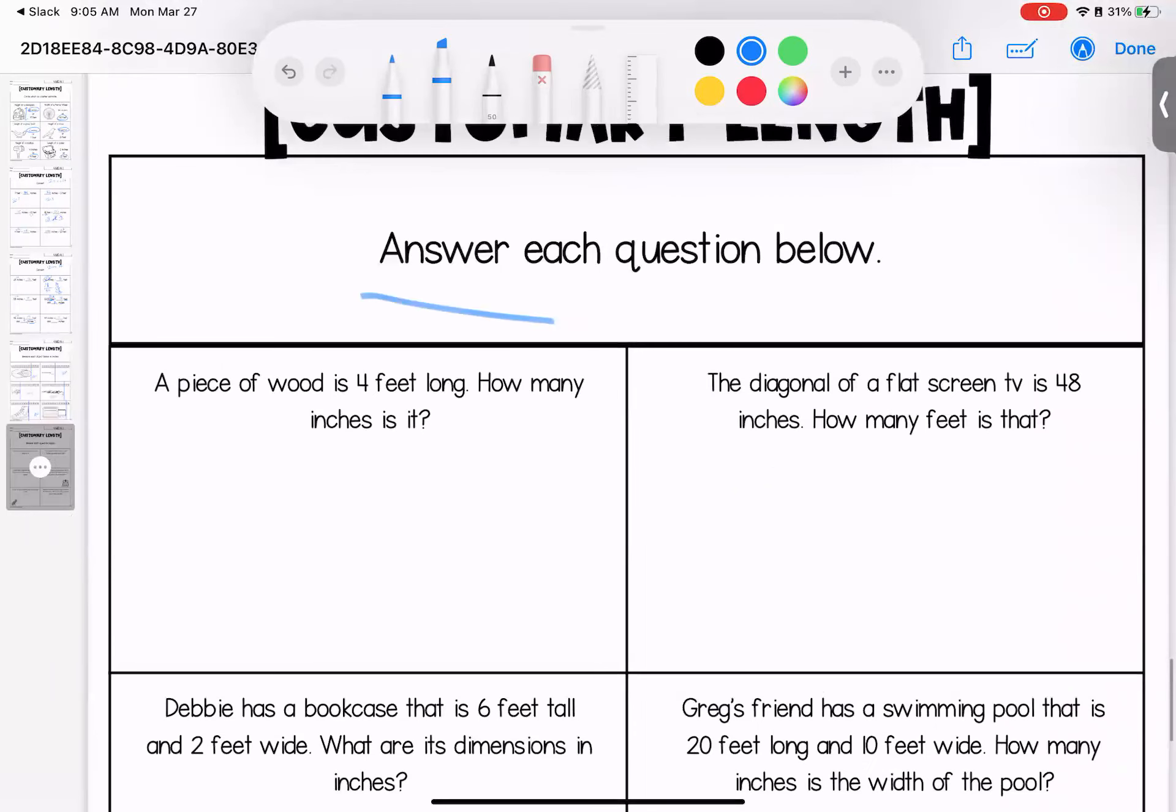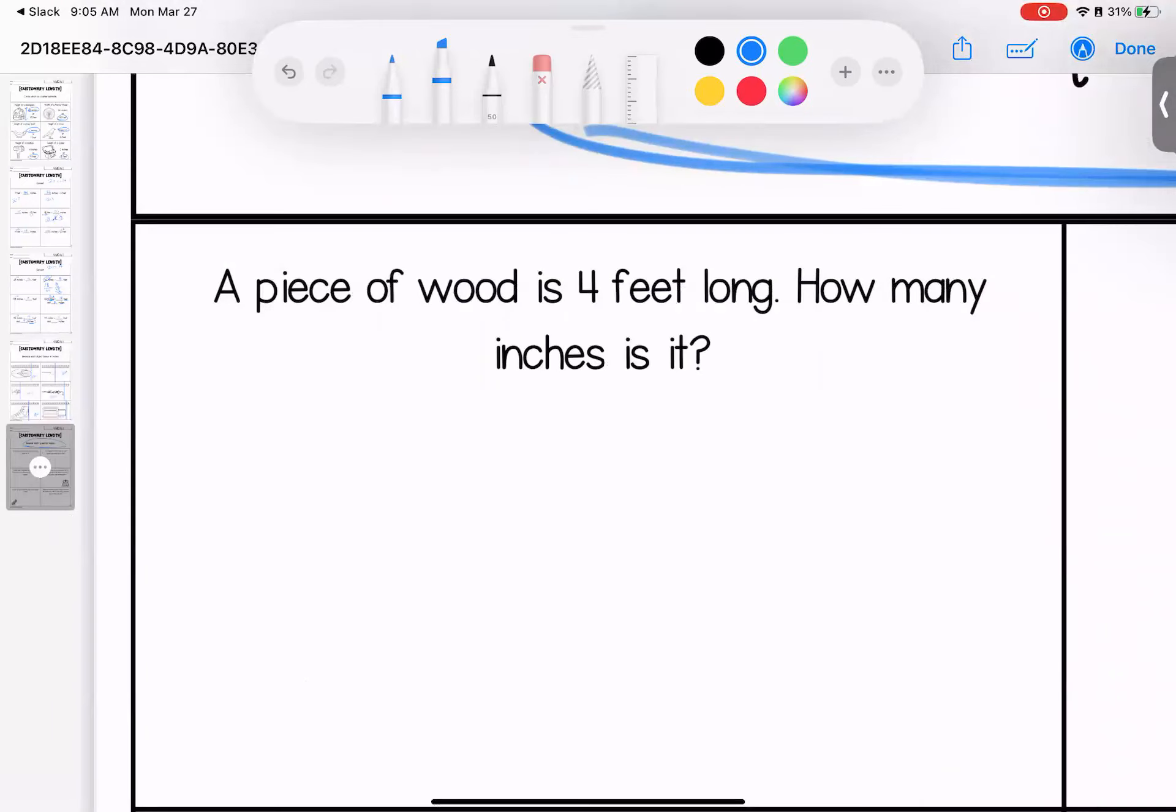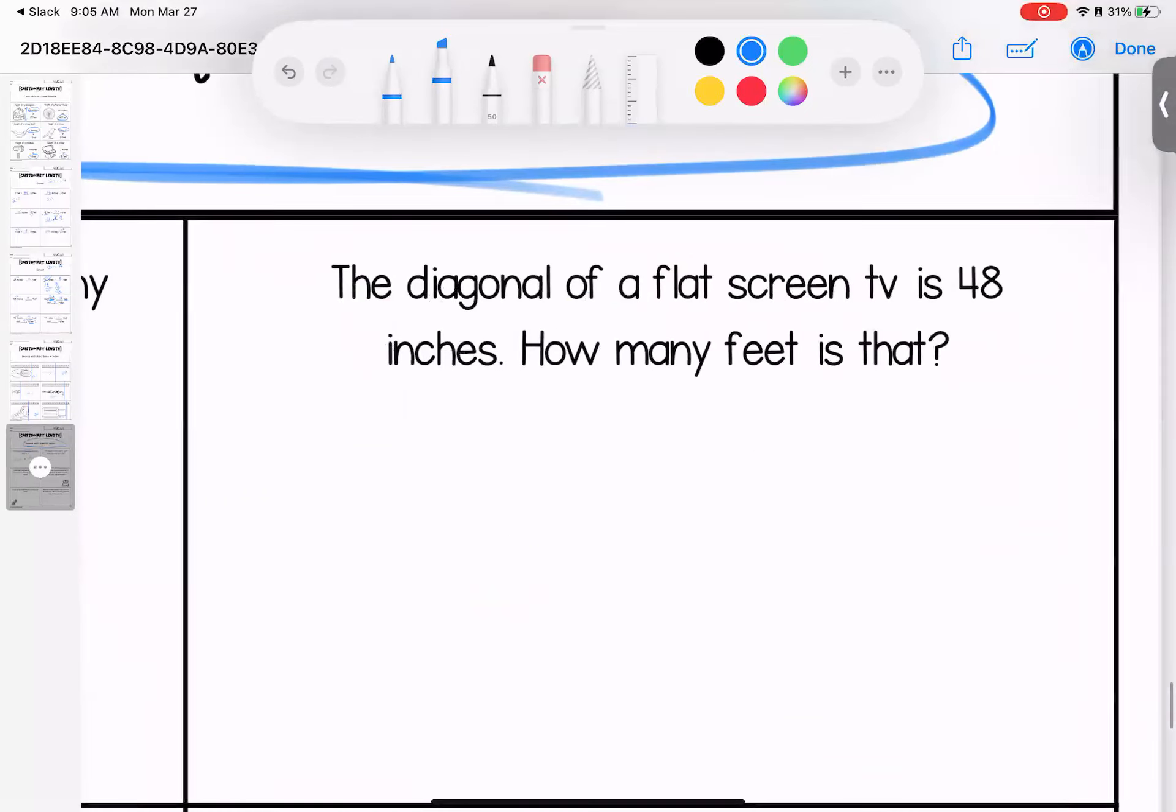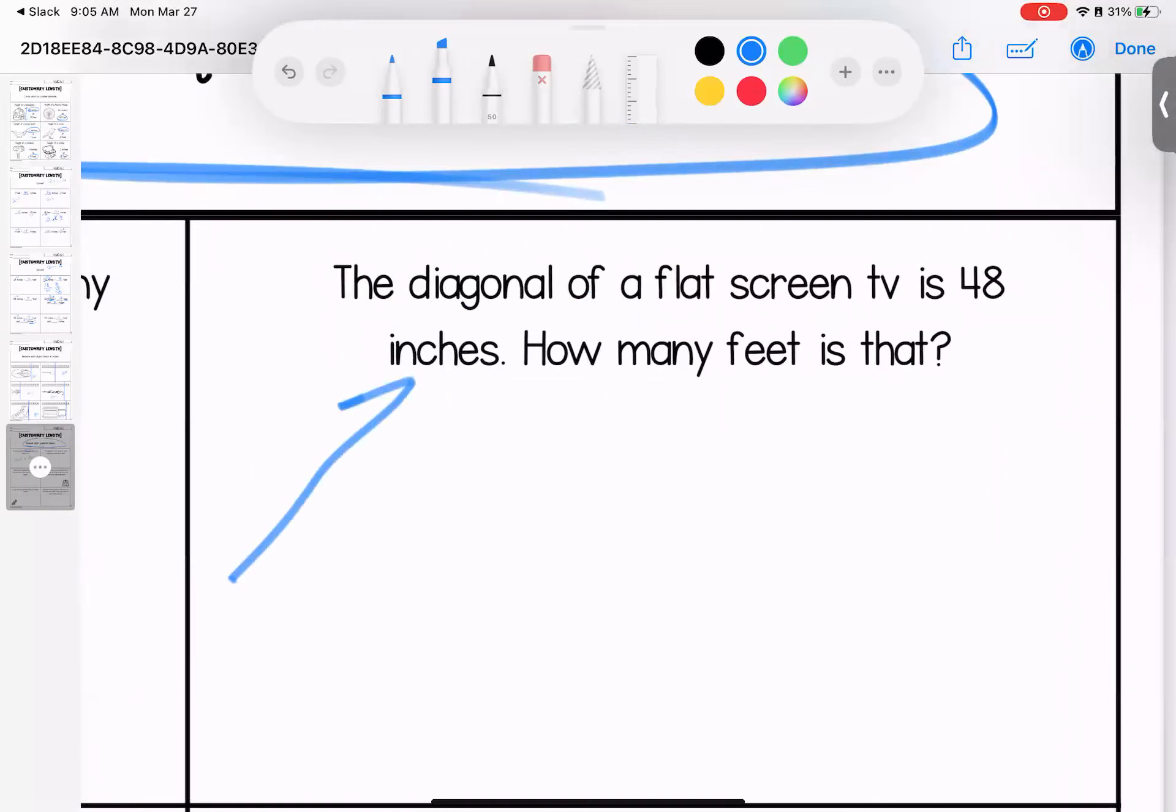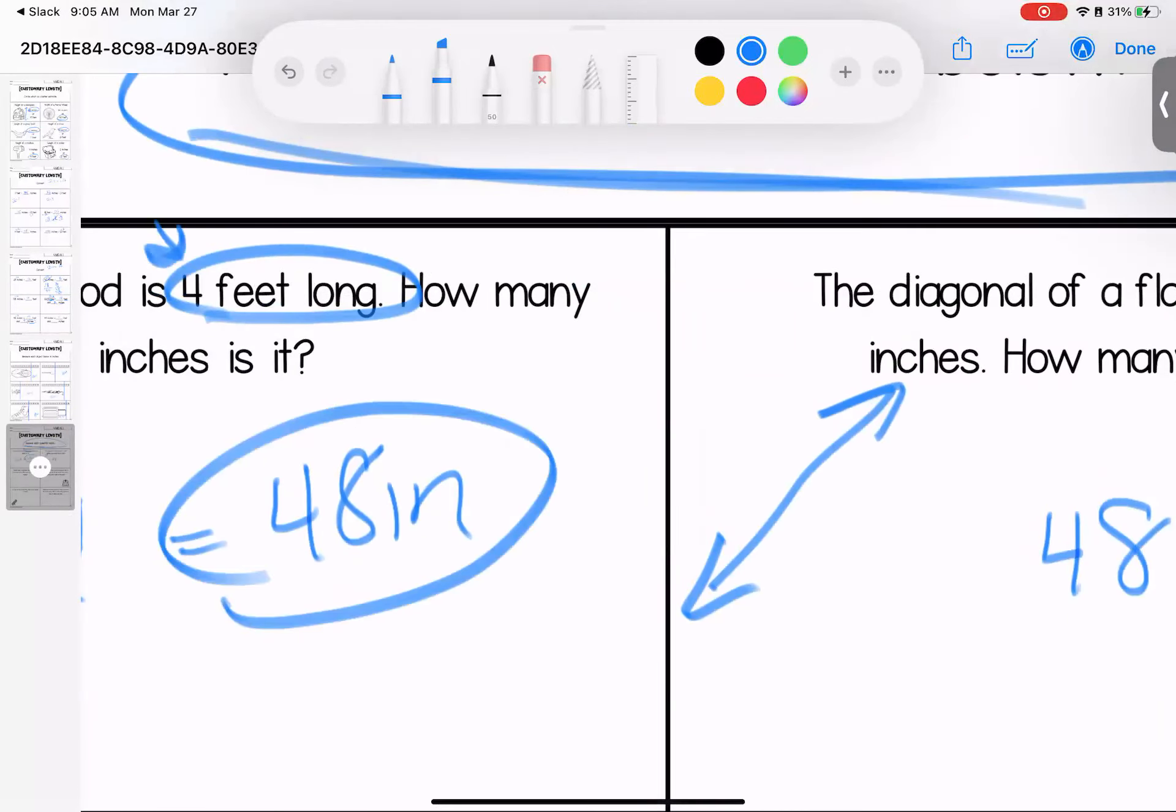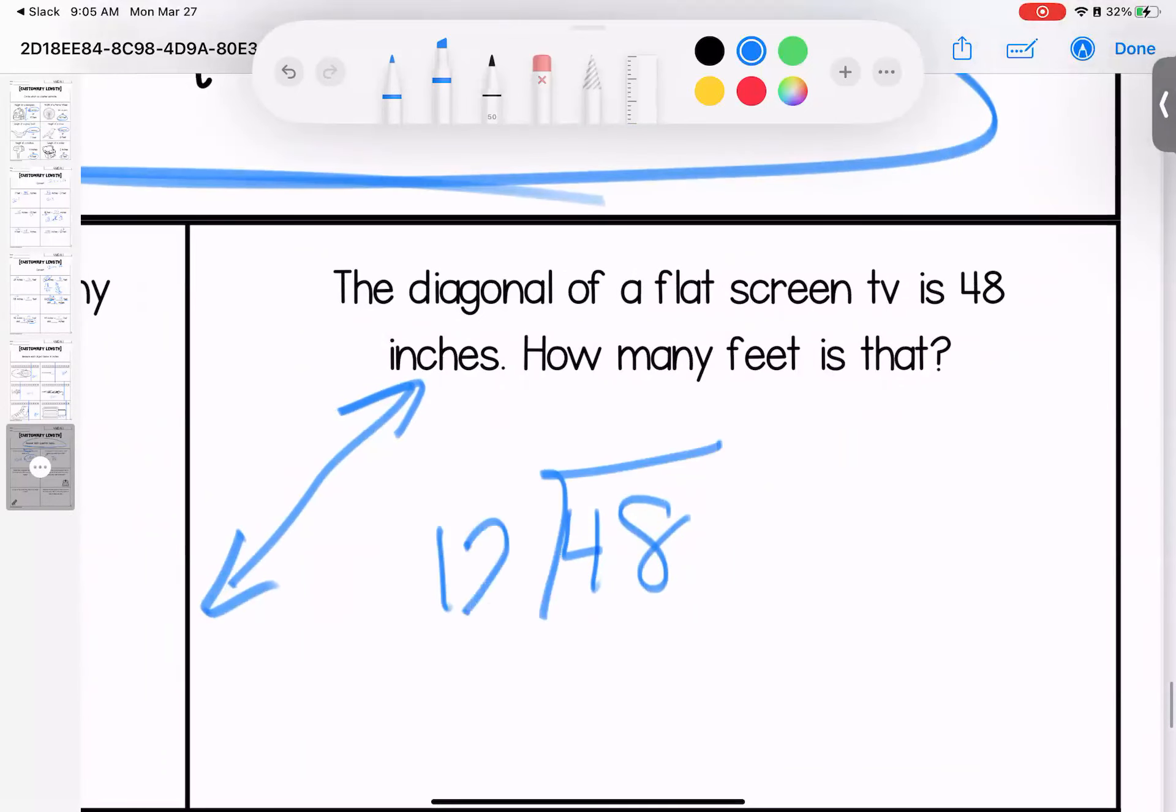All right, loves. Last thing. Word problems. Let's figure out what are they asking me to do and what numbers are they giving me to use. Let's dive in. A piece of wood is 4 feet long. How many inches is it? Well, if there are 12 inches in a foot and I have 4, 12 times 4 is 48 inches. The diagonal, meaning sideways measurement of a flat screen TV is 48 inches. How many feet is that? Well, over here, 48 inches was 4 feet. I can use what I know or I can divide this by 12. The answer is 4 feet.